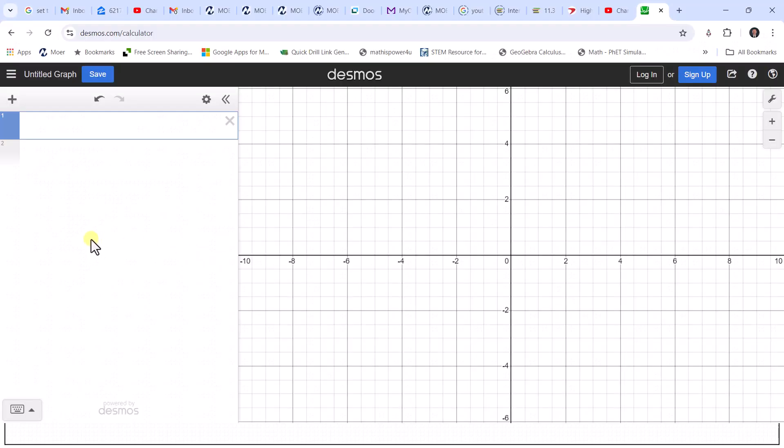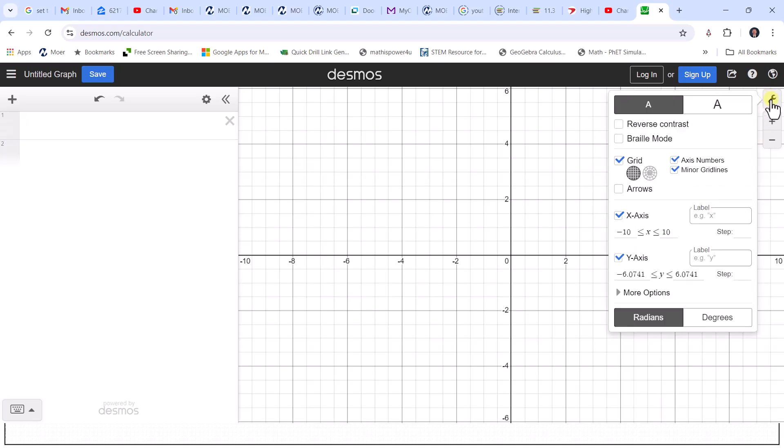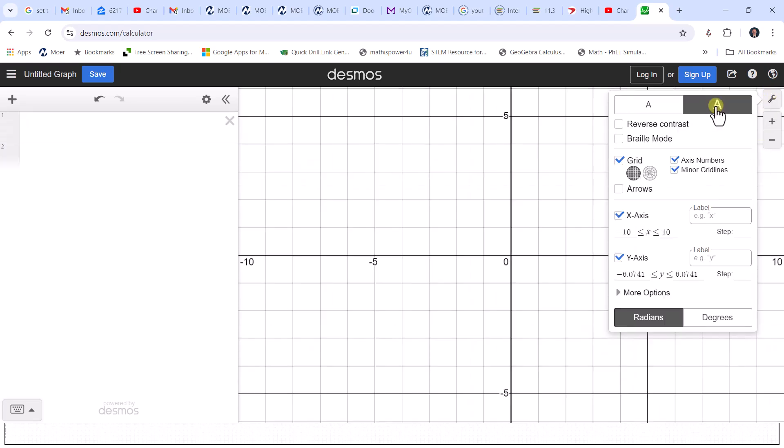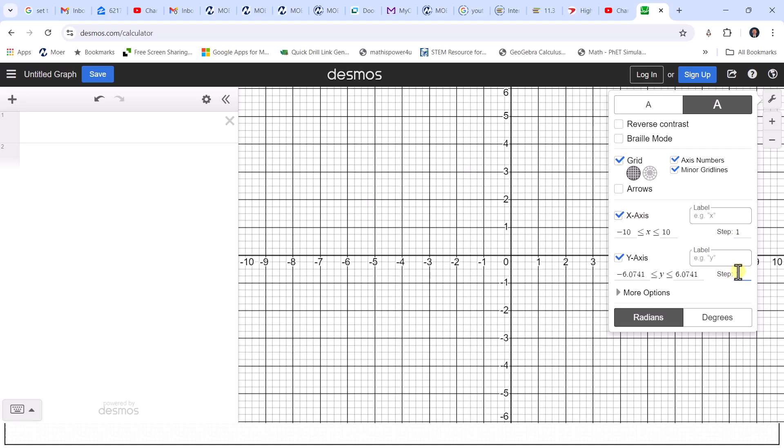I'm going to change some settings. I'm going to click on the graph settings in the upper right-hand corner, which is this wrench. I'm going to click on the large capital A, which will make the coordinate plane and graphs more bold. I will also change the step for the x and y-axes to one. And now let's close the graph settings by clicking on the wrench.